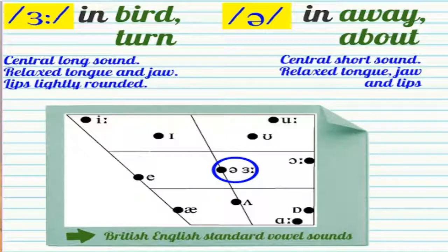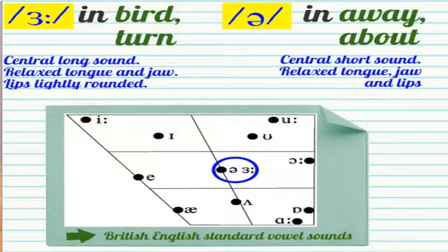أما الشفايف نطلق عليهم lightly rounded، يعني يدوب فيه نوع من الدوران البسيط. أما لو تحدثنا عن صوت الشواء مقارنة بهذا الصوت — زي كلمة away وabout — نجد أنه أيضا central ولكنه short sound. واللسان والفك والشفايف كلهم relaxed أيضا. ما فيش فرق كبير إلا أنه حاجات بسيطة في وضعية النطق.